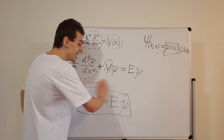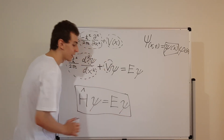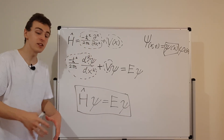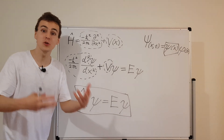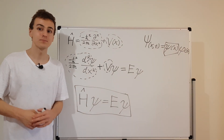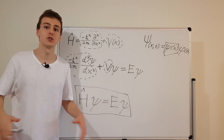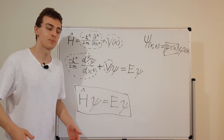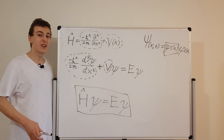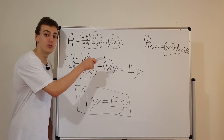This is the time independent Schrödinger equation, where we're just trying to find these psi values. But the Hamiltonian operator can also give you the time evolution of the system in the time dependent Schrödinger equation, and we'll go into a lot more detail in later videos of this playlist. Make sure you watch all of those videos — you can find them in the quantum mechanics playlist.